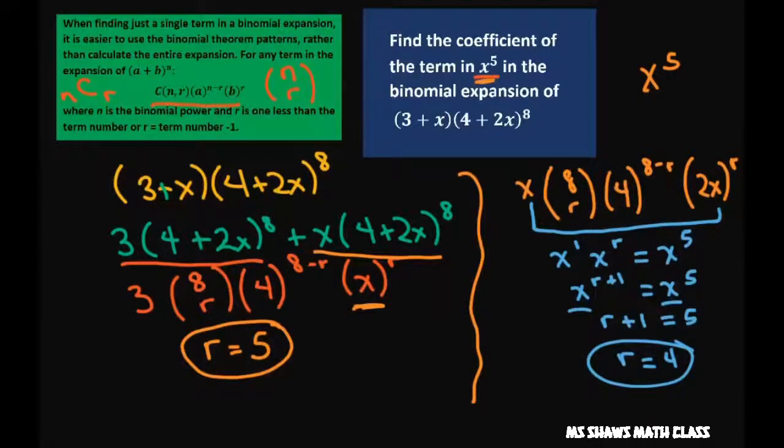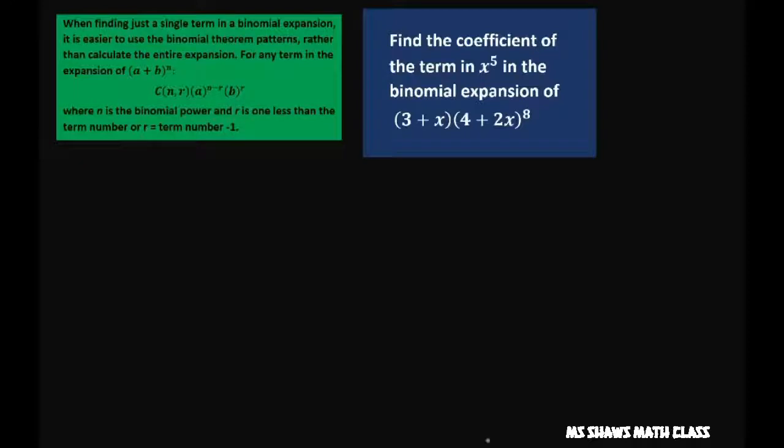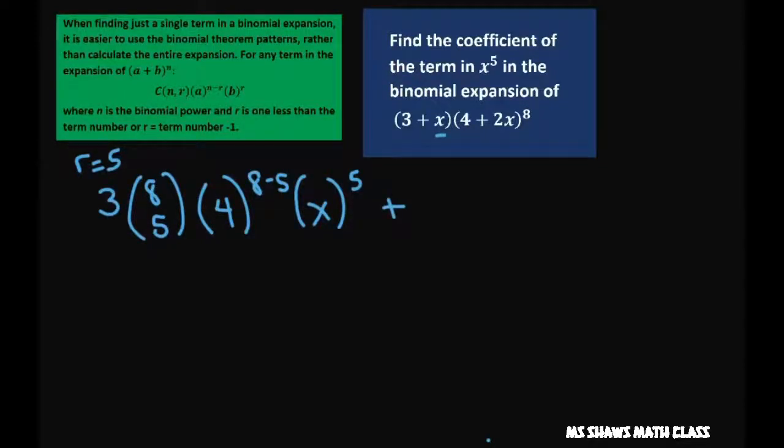So we write it out. We're going to have, filling everything in, we have 3, and this one my r was 5, so we have 8 choose 5, 4 to the 8 minus 5, and then we have x to my r is 5. Plus x, and in this side my r was 4, so this is going to be 8 choose 4, and then we have 4 to the 8 minus 4, and then we have 2x to my r power which is 4.